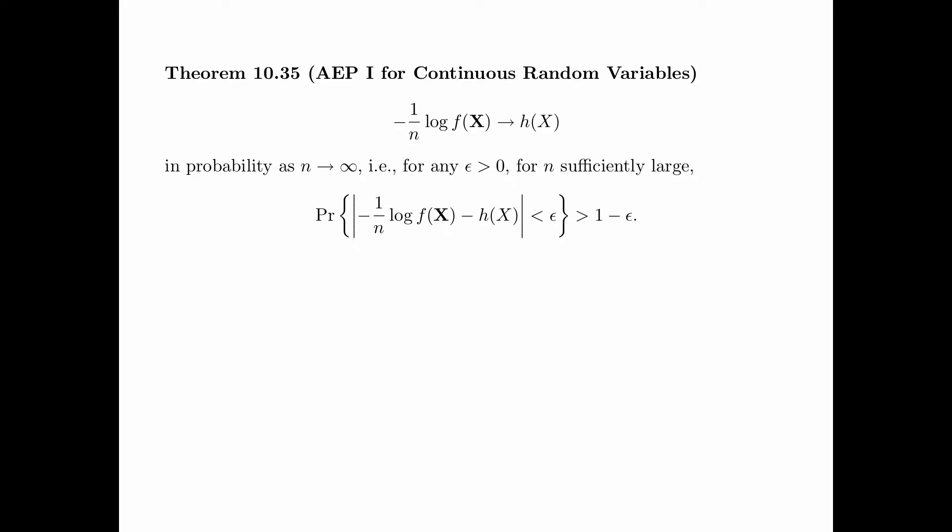Theorem 10.35 is the AEP1 for continuous random variables, which is exactly the same as its discrete analog, except that the probability density function is now in place of the probability, and the differential entropy is now in place of the discrete entropy.